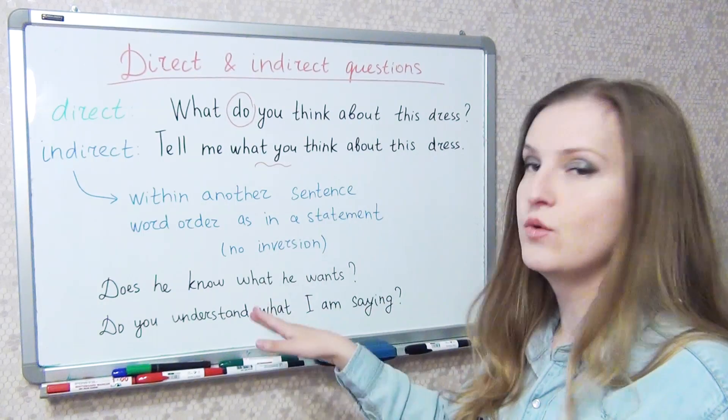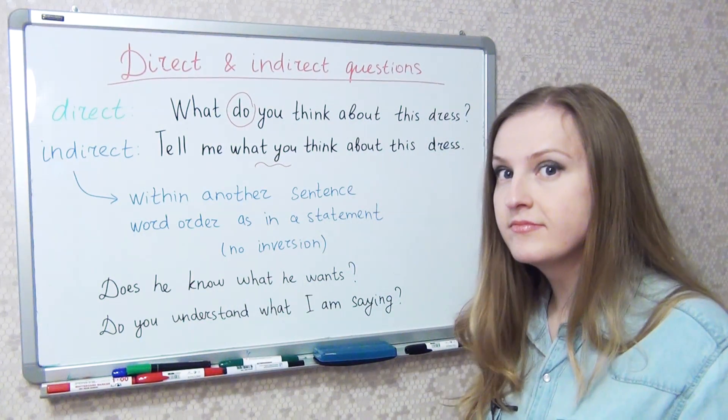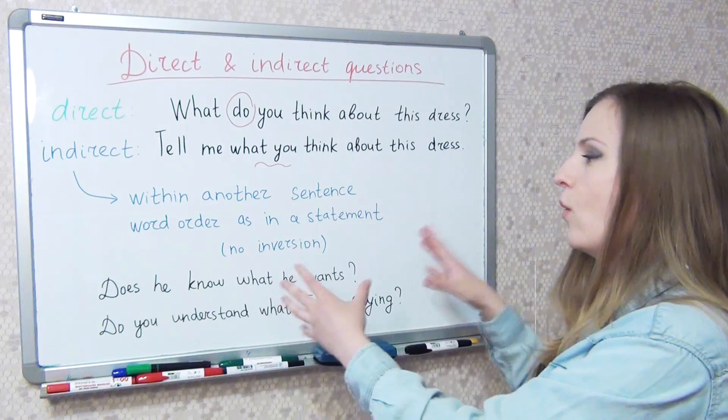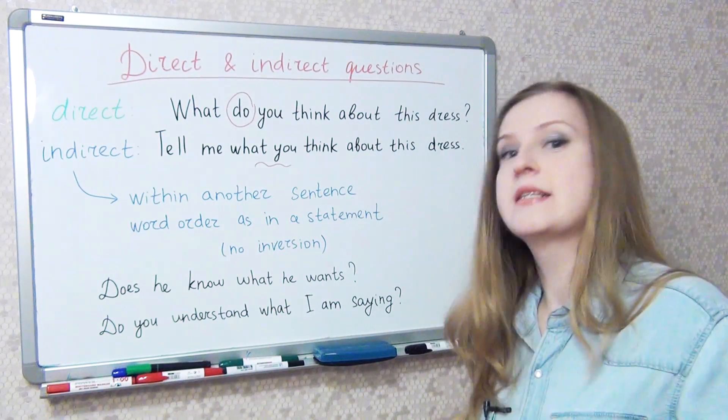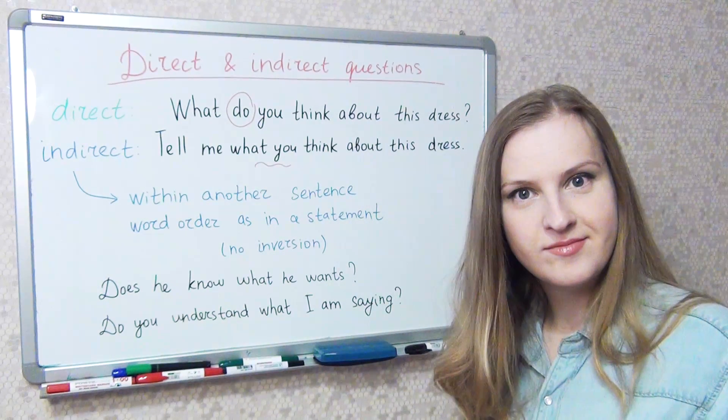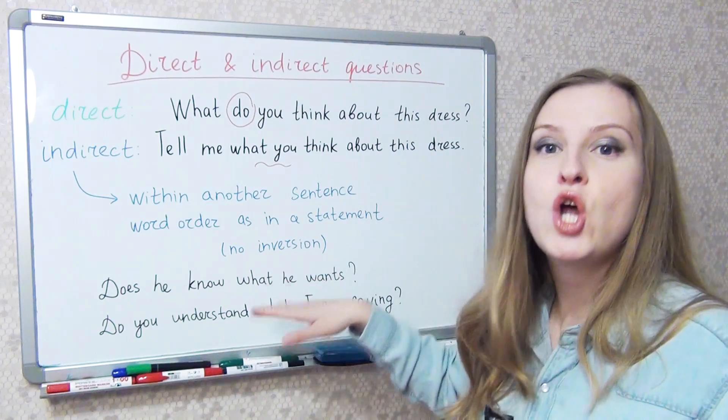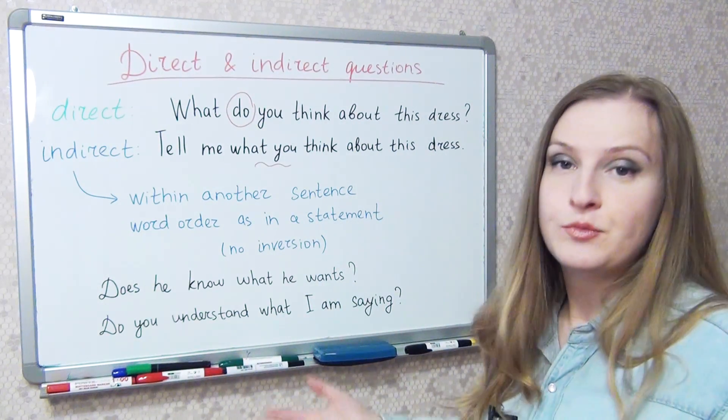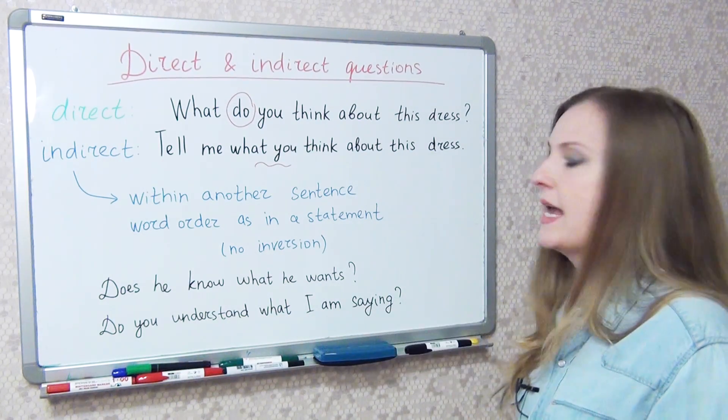Let's take a look at two more examples. Does he know what he wants? Does he know it? What does he want? Does he know what he wants? Here no inversion, he wants. No auxiliary verb does. We drop it. Do you understand what he wants? Do you understand what I am saying?